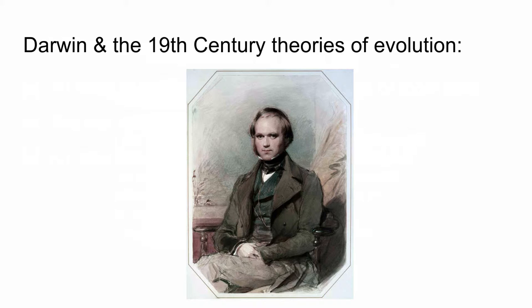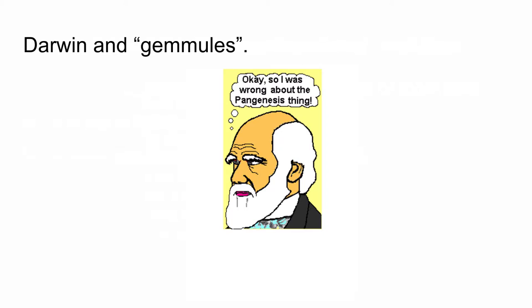One of the things that Darwin got wrong was, when he started thinking about how cells transfer information from one cell to another as new organisms arise, as parents give rise to children, how does that happen? One of the things he thought was that there was something called gemmules, and that there was information in all of our cells that was literally transmitted to only the reproductive cells. Pangenesis was the overall theory that gemmules was attached to.